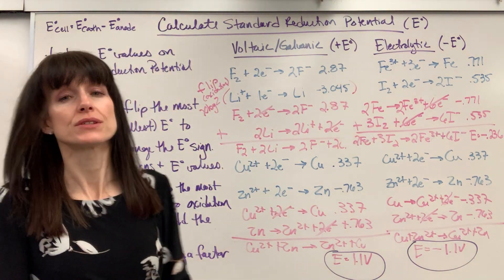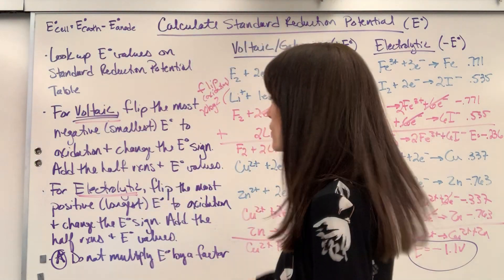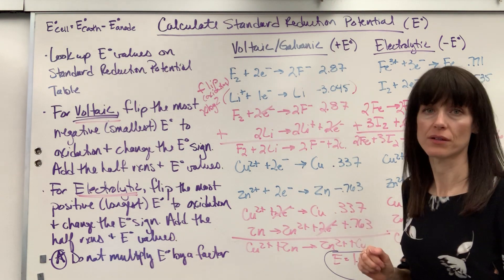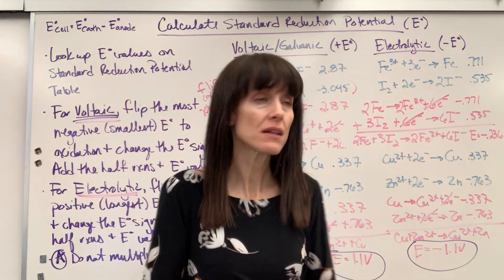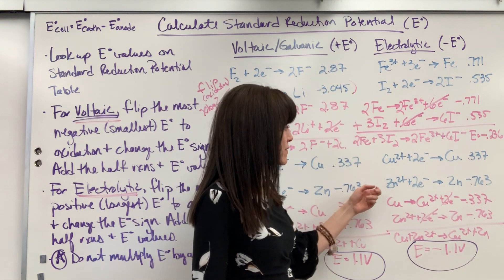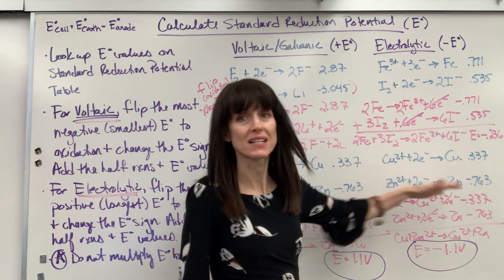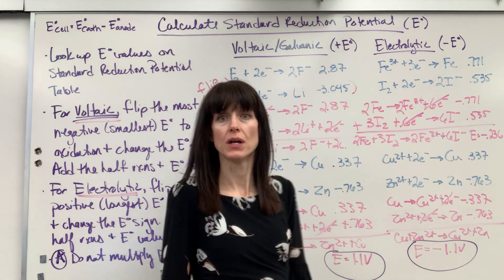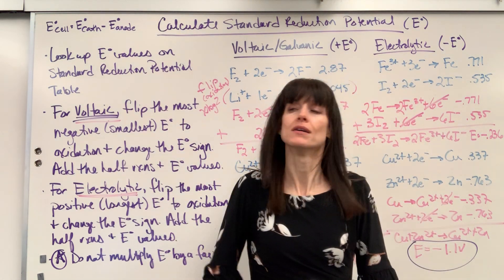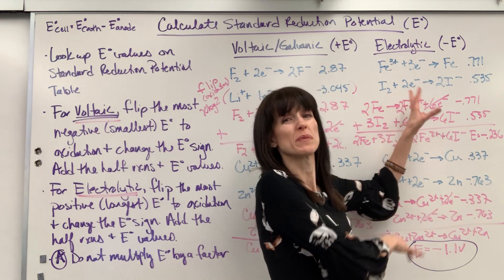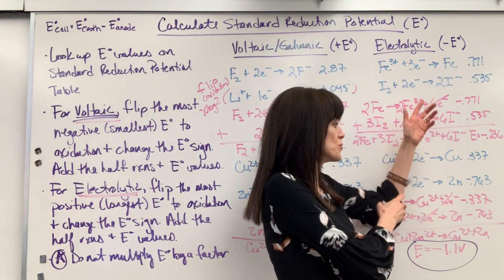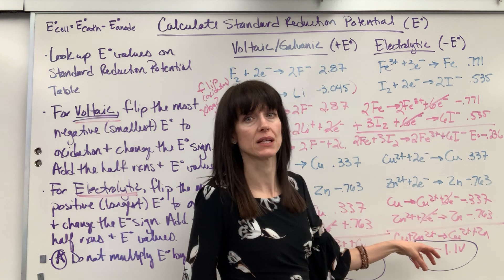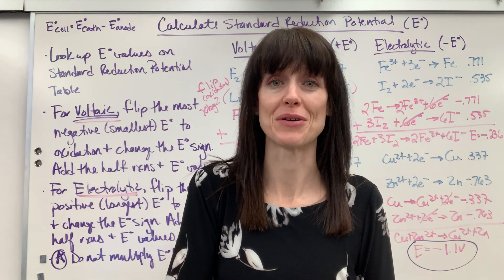Your two big takeaways: if you're doing a voltaic cell, you find the most negative, smallest number, flip it, add the half reactions, and add your potentials. If you're doing electrolytic, you flip the largest, most positive number. Flip the smallest most negative for voltaic because it gives you a positive E. Flip the largest most positive for electrolytic because it gives you the largest negative E. Spontaneous means positive E; non-spontaneous means negative E. Good work and good luck with all of your homework.